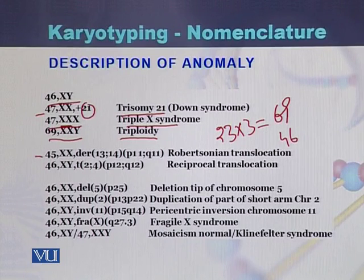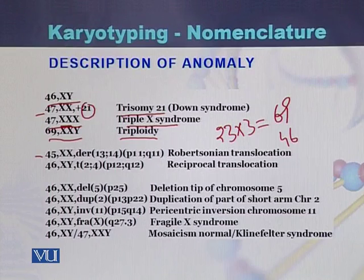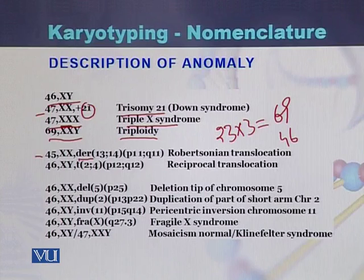When written as 45,XXder, it means there is deletion of one chromosome. Originally there should be 46 chromosomes, but in such an individual the number is 45 because one chromosome has been deleted. This is due to a process called Robertsonian translocation.